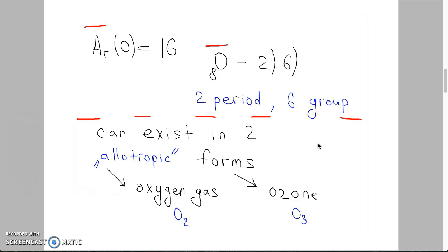We know that oxygen exists in two allotropic forms. One is oxygen gas, second is ozone. The chemical formula of oxygen gas is O2, chemical formula for ozone is O3.